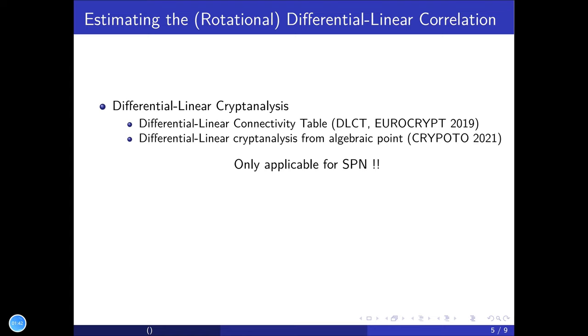Later, at CRYPTO 2021, another method was proposed to compute the correlation of differential-linear distinguishers from an algebraic point. But the above two methods are only applicable for SPN ciphers, not for ARX ciphers.